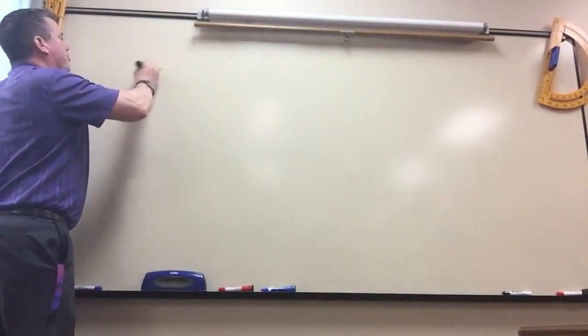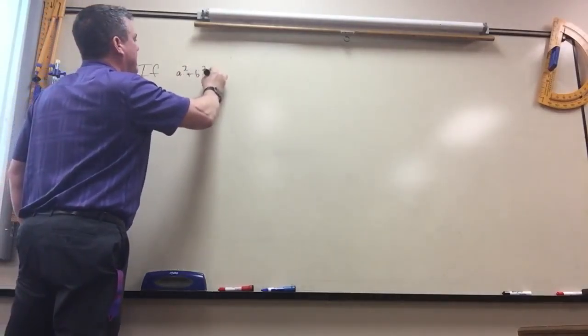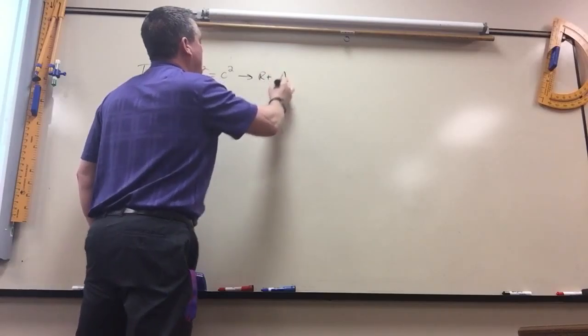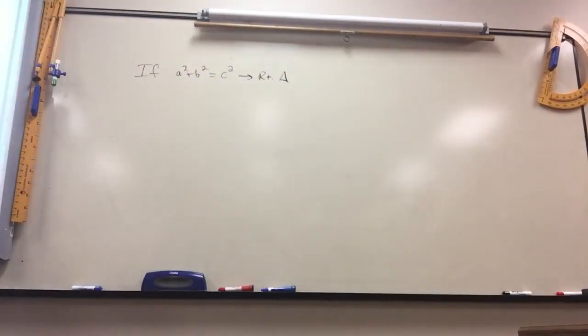So if a squared plus b squared equals c squared, it's a right triangle. We can also check to see if it's an obtuse triangle or an acute triangle.